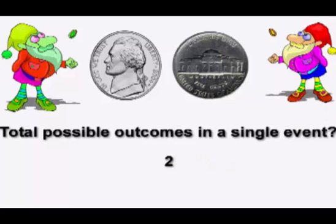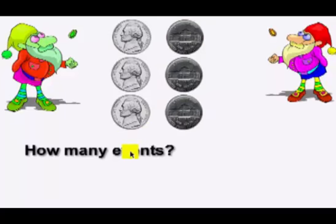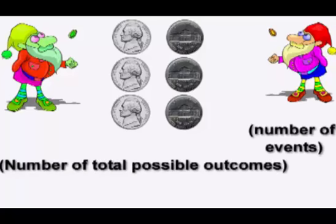Then, how many different events will there be? There are going to be three events. So two possible outcomes per event and three events. We just go ahead and use the probability formula: the number of total possible outcomes in a single event raised to the number of events. That gives us our sample space. So two to the three equals eight.